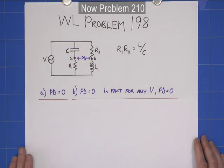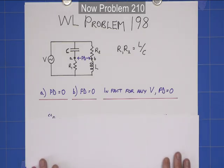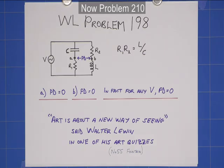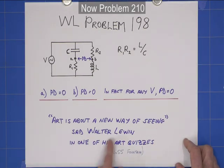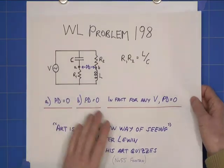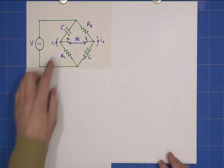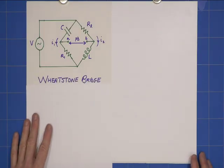So, how did I manage to do that and save myself a lot of tedious arithmetic? Walter Lewin likes to do art quizzes, and there are some little nuggets of good advice in his art quizzes. One of the bits of advice was: art is about a new way of seeing. He said this in his art quiz number 55, concerning the fountain. So, let's think about a new way of seeing. If I redraw this circuit, I can make it look like that. It's exactly the same circuit — I've just rearranged these two arms a little bit. And if you saw that to start with, you'd immediately think that looks a bit like a Wheatstone bridge.